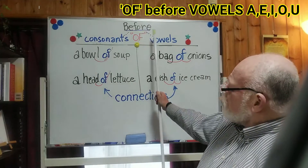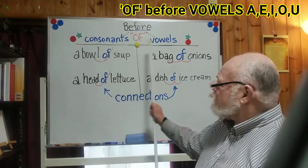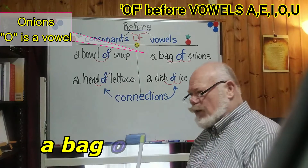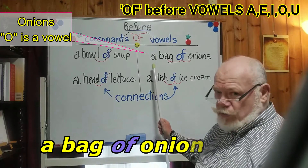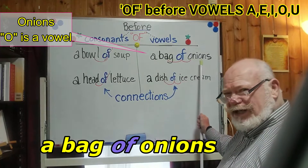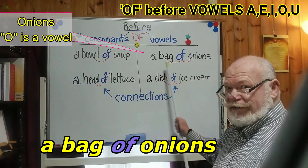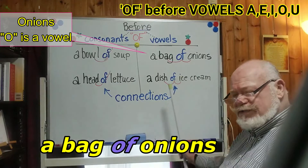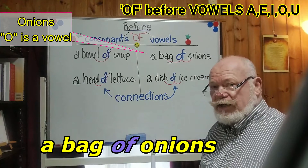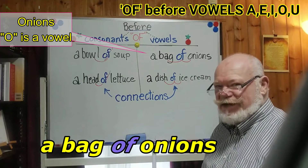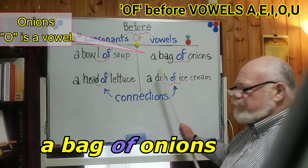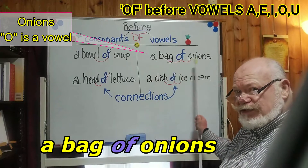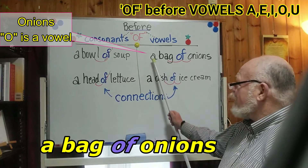Let's go to the next one — before vowels this time. Consonants and vowels — the English language, as you know, is broken up into two basic parts. So the word 'of' before vowels: 'a bag of onions' becomes 'a bag of onions.' This time we don't reduce the 'of' — we connect it. But the F is not crossed out. And as you know, although it's spelled with F, we pronounce it usually with more of a V sound: 'of,' 'of.' We don't cut it out this time. We connect it together. 'A bag of onions.' 'A bag of onions.'